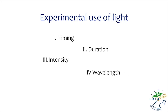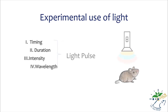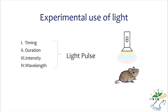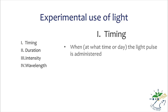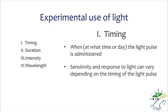A light stimulus, after the subject has been adapted to darkness, is called a light pulse. The first factor is timing—when or at what time of day a light pulse is administered. This factor is important because, depending on the time of day, sensitivity to light and even the response to light can vary.